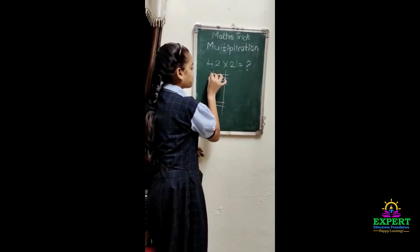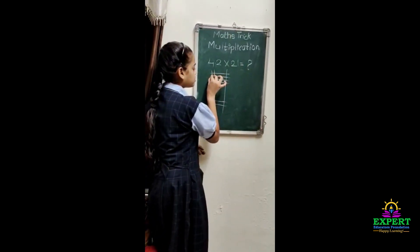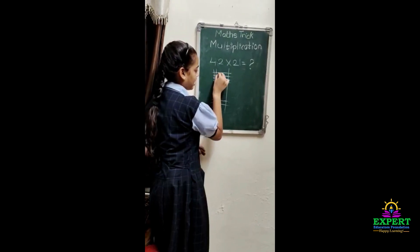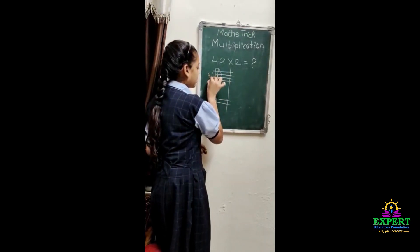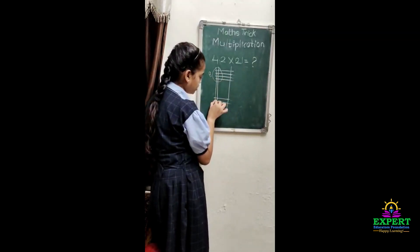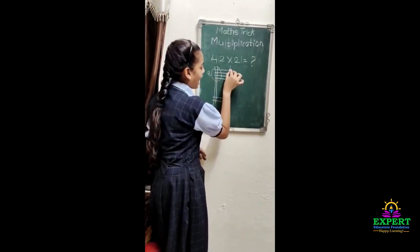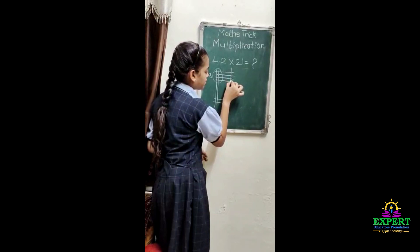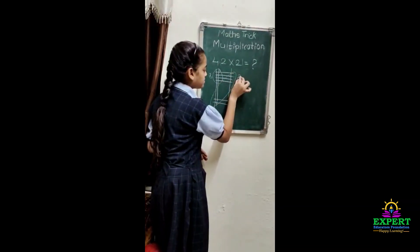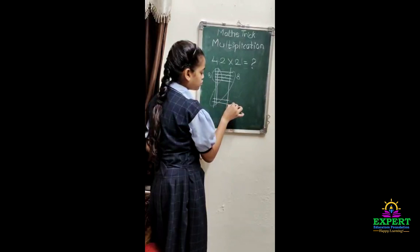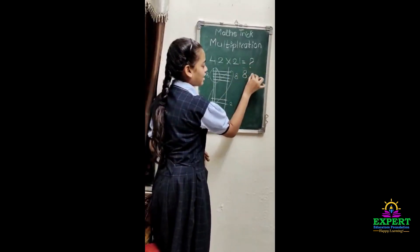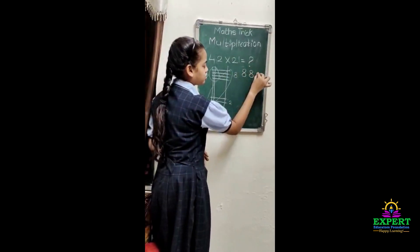So now here one, two, three, four, five, six, seven, eight — here we are getting eight points. Here one, two, three, four and this one, two, three, four — so this total also comes eight, and here two. So the answer of this is 882.